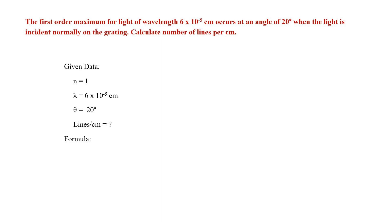The formula we use is: a+b sin θ = nλ. First, we need to calculate a+b, since θ, n, and λ are all known. Then from a+b we can calculate the number of lines per centimeter. We rearrange the formula: a+b = nλ / sin θ.